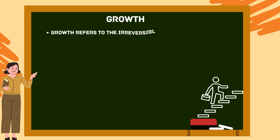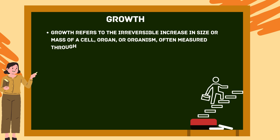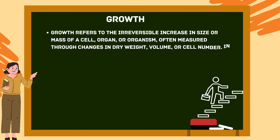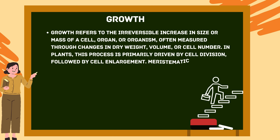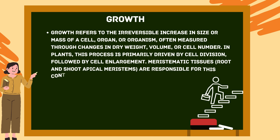Growth refers to the irreversible increase in size or mass of a cell, organ or organism, often measured through changes in dry weight, volume or cell number. In plants, this process is primarily driven by cell division, followed by cell enlargement. Meristematic tissues — root and shoot apical meristems — are responsible for this continuous and indeterminate growth.